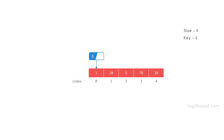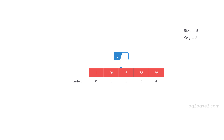So let us start from index 0. First we compare 1 with 5 but it is not the same so we move to the next element. Now we compare 20 with 5. Again it is not the same so we move to the right. Take the element and compare with key 5 — it is the same. So the search element 5 is found in the array.